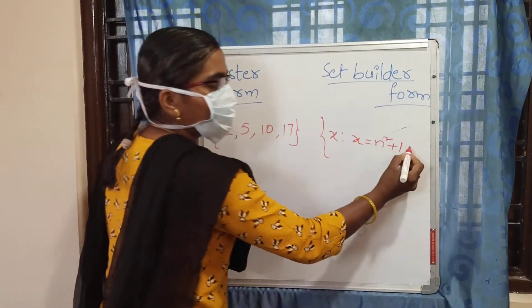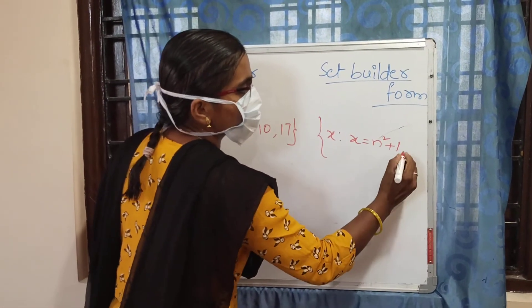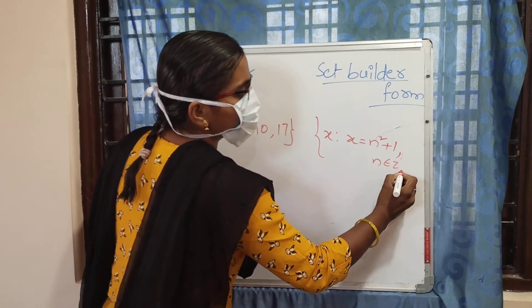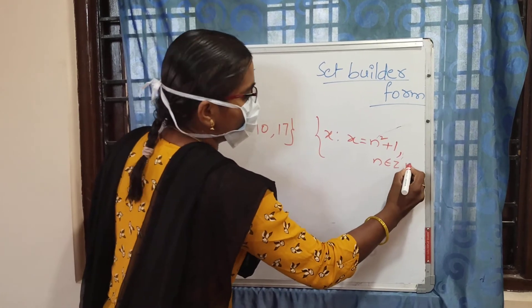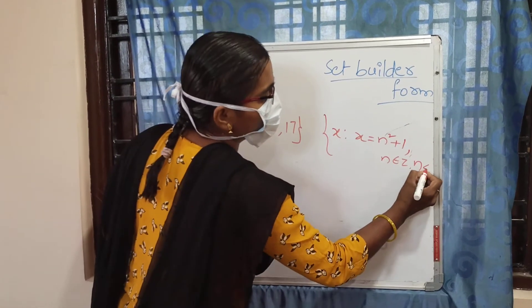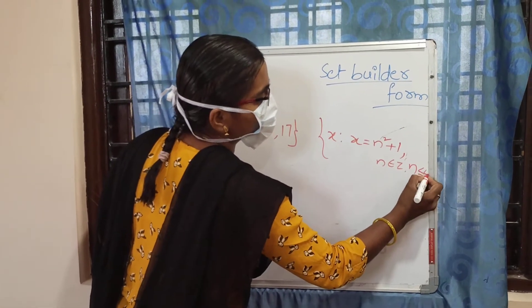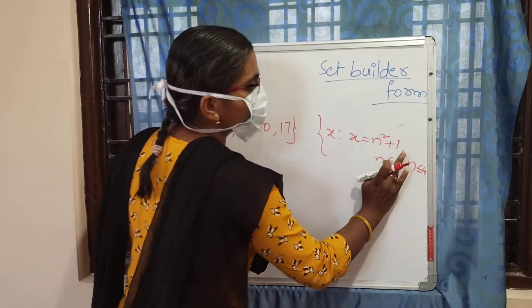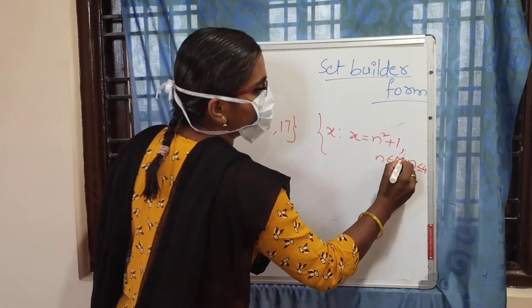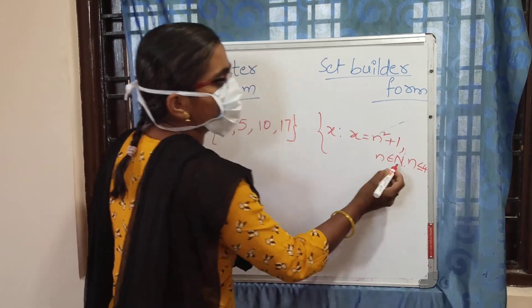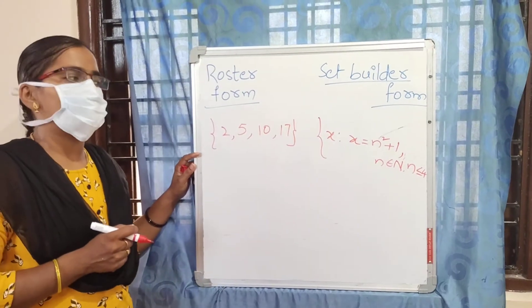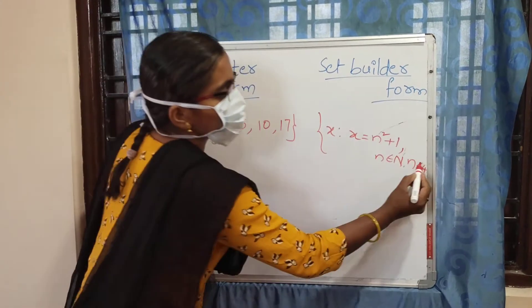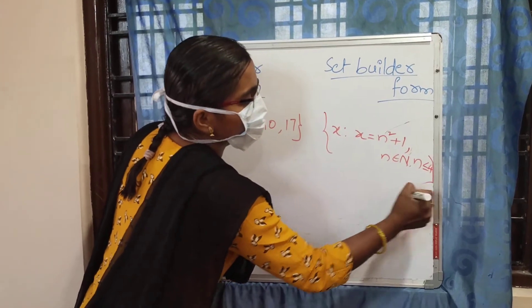The set builder form is: x such that x = N² + 1, where N belongs to the natural numbers and N ≤ 4. N belongs to capital N, which represents natural numbers. Natural numbers start from 1. So this is the set builder form.